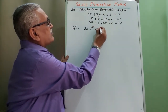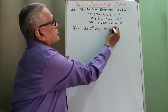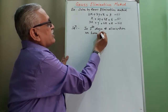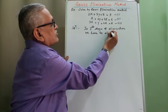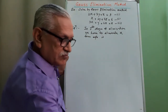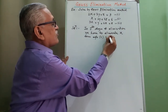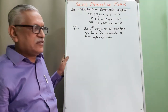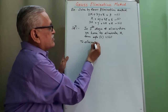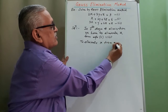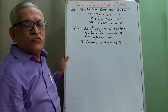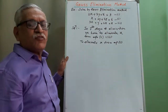In the first stage of elimination, we have to eliminate x from equation 2 using the first equation. To eliminate x from equation 2, we multiply the first equation by the ratio a21 divided by a11, and then subtract it from equation 2.